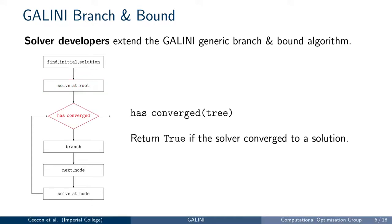Then Galini will check for convergence. If the tree's best feasible solution and the best possible solution are within a user-specified tolerance from each other, Galini stops exploring the branch and bound tree and returns the solution to the user. Galini's solution includes the best feasible solution point and objective value, together with the best possible objective value.